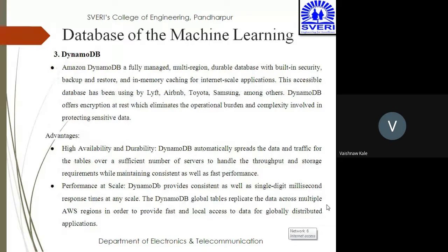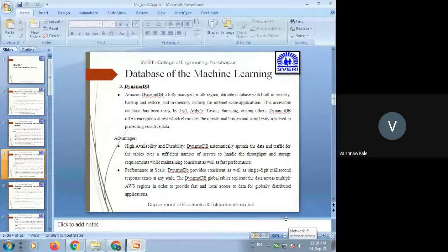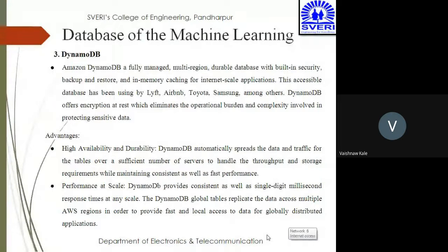The third one is DynamoDB — Amazon DynamoDB, which is a fully managed multi-region durable database with built-in security, backup and restore, and in-memory caching for internet-scale applications. This database has been used by Lyft, Airbnb, Toyota, Samsung, and others. DynamoDB offers encryption at rest, which eliminates the operational burden and complexity involved in protecting sensitive data.